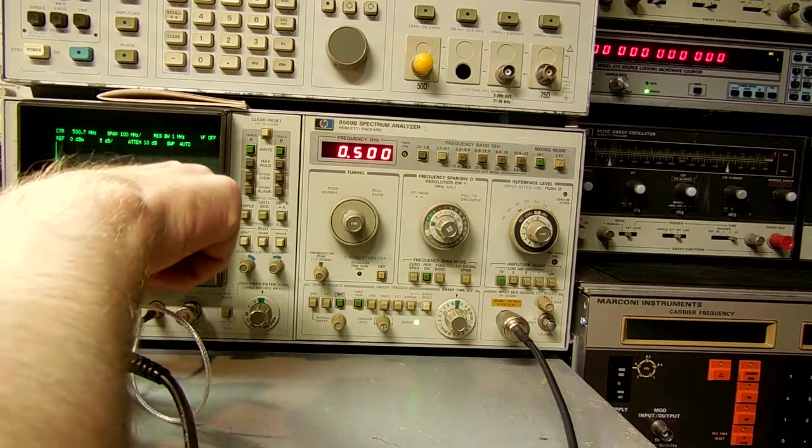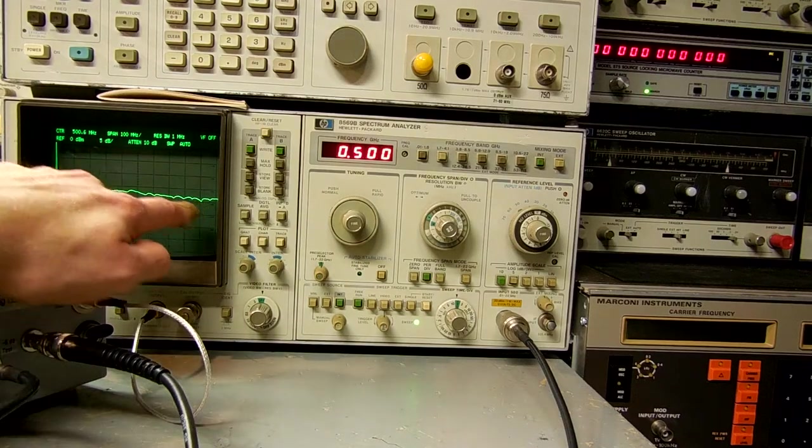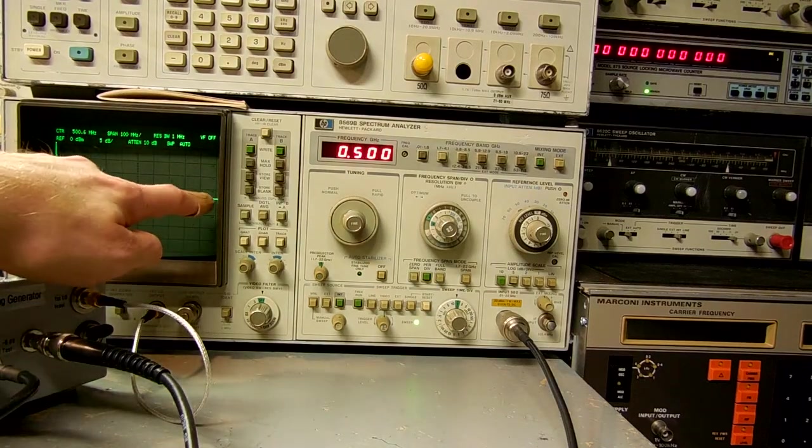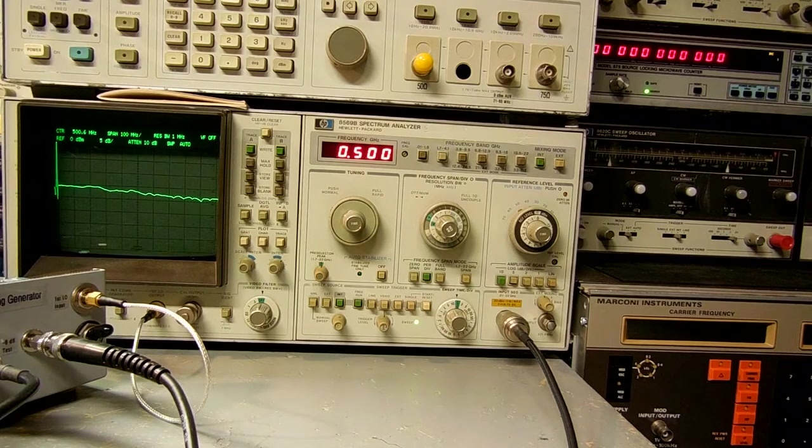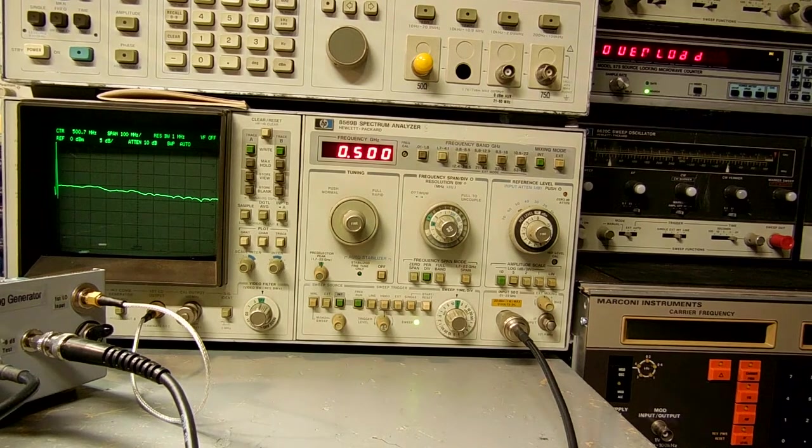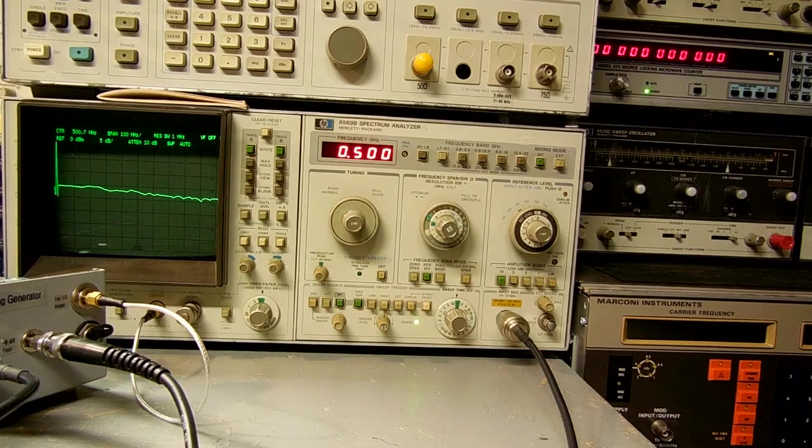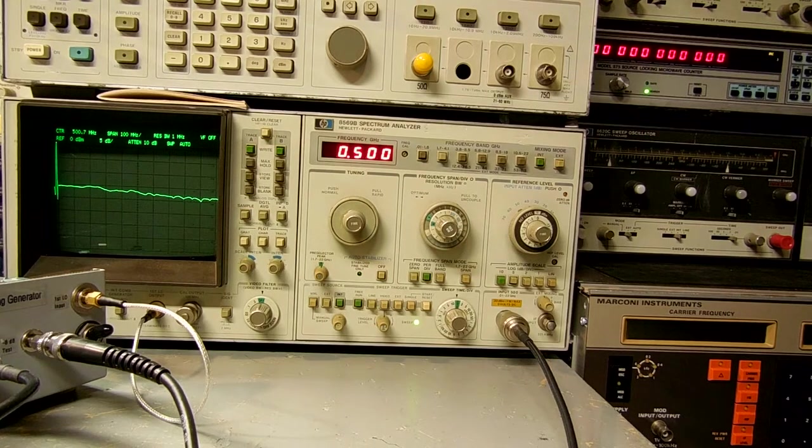This ripple would be removed by using an automatic level control circuit that just adds unnecessary complexity into our output circuit. I'll show you a trick we can get around that.